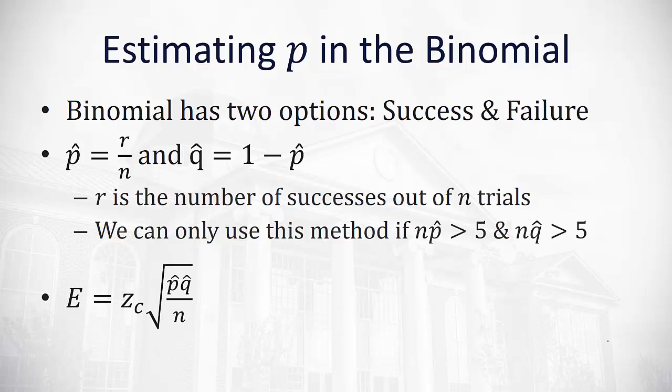But if we do have this relationship that n times p hat and n times q hat are both greater than 5, we can calculate a potential error between our sample proportion and the actual population proportion using a z-critical value. This formula says we take the z-critical value times the square root of p hat q hat divided by n.